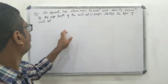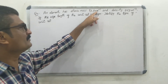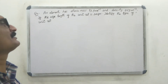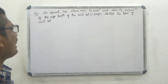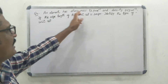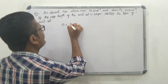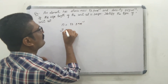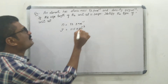First problem: an element has atomic mass 93 gram per mole and density 11.5 gram centimeter raised to minus 3. If the edge length of the unit cell is 300 picometer, identify the type of unit cell. The atomic mass is 93 gram per mole and density of the unit cell is 11.5 gram centimeter raised to minus 3.